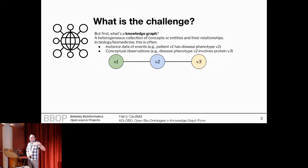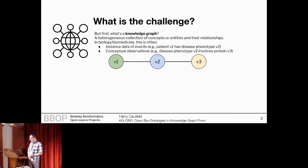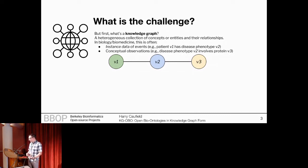That's a pretty high level definition. If you go out on the internet, sometimes people are just like, oh, it's a thing that Google invented. That may or may not be true, but at least in biology or biomedicine, it's a pretty convenient data structure to represent those biological relationships that we're all interested in. So that may involve instance data of events like a patient, that's one of these nodes V1, has a disease phenotype V2. But then you can also combine that with more conceptual observations like that disease phenotype V2 involves a particular protein V3.